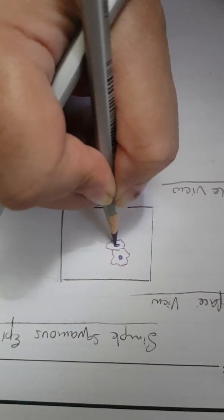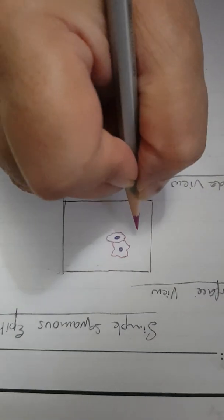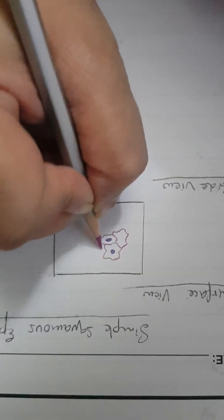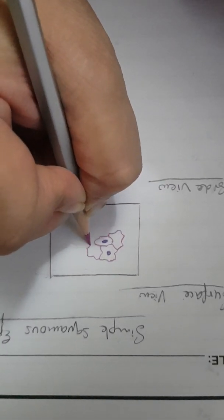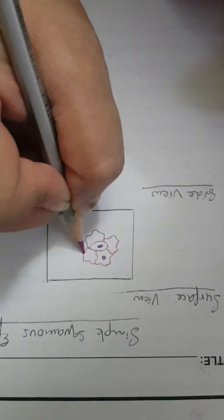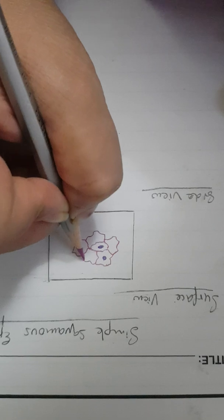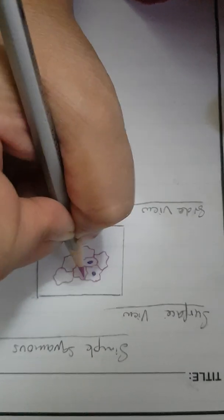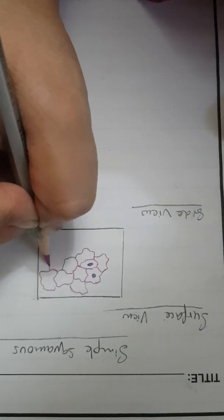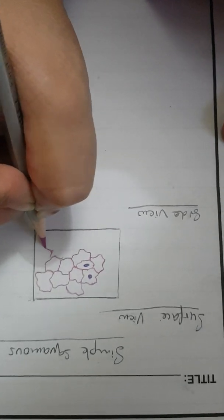You can draw an ovoid nucleus here. Each polygonal cell has wavy margins which fit into the wavy margins of other polygonal cells and give rise to formation of a mosaic pattern. You can easily draw these cells.